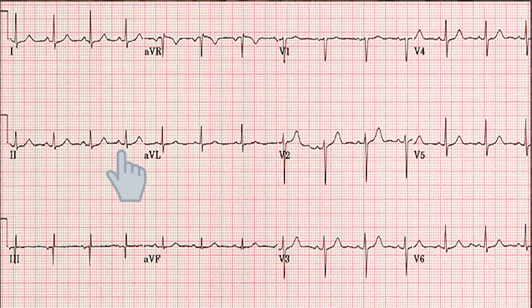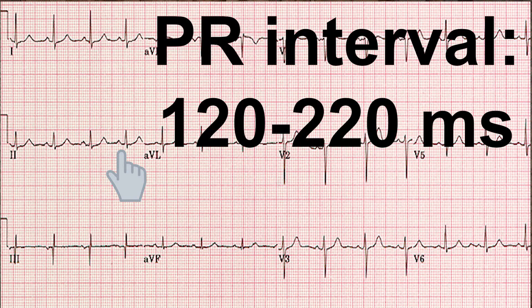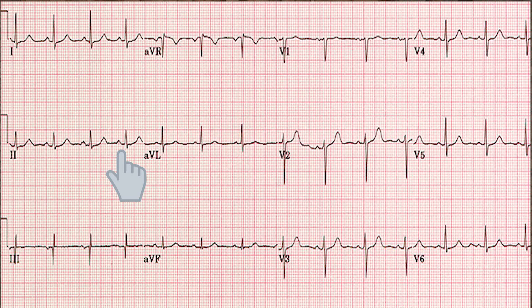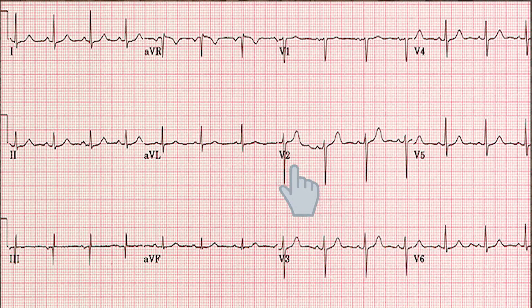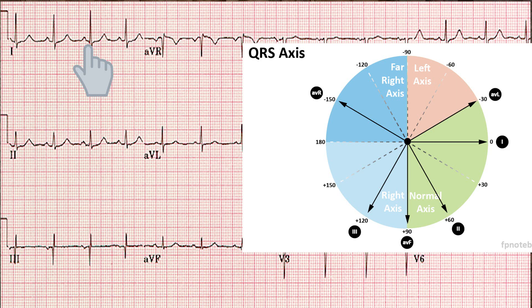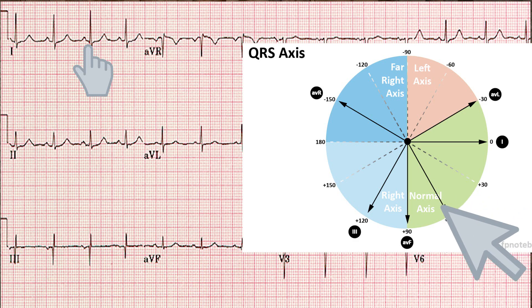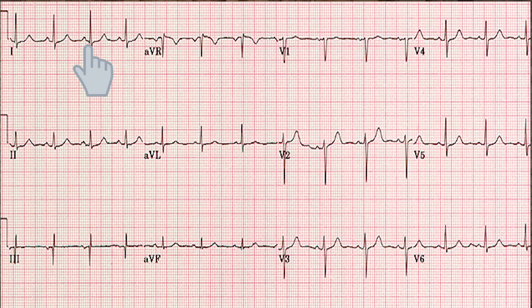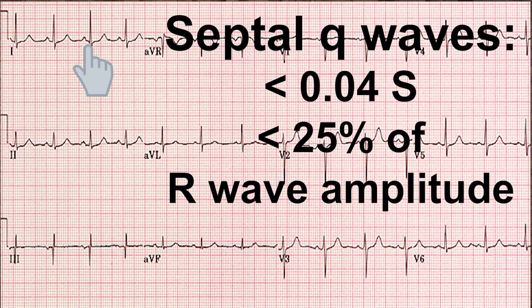The PR segment should be isoelectric compared to the baseline. The PR interval duration should be between 0.12 and 0.22 seconds. Septal Q-waves can be seen in leads V5 and V6, and in leads 1 and AVL when the QRS or cardiac axis is to the left of 60 plus degrees, and in leads 2, 3, and AVF when the QRS axis is to the left of 60 plus degrees. Septal Q-waves are narrow — less than 0.04 seconds duration — and small, less than 25% of the R-wave amplitude in that lead.